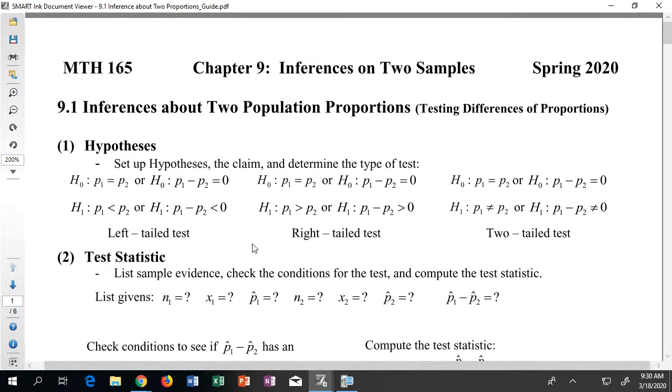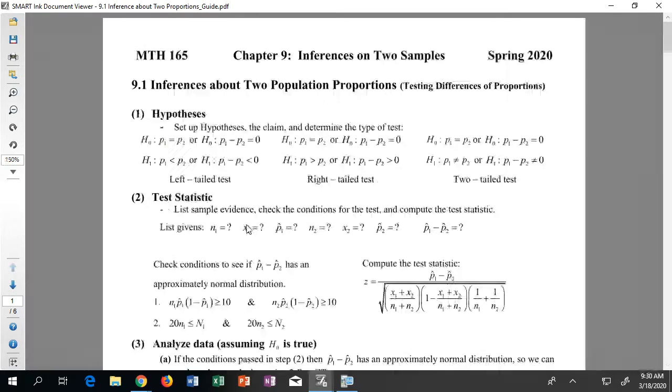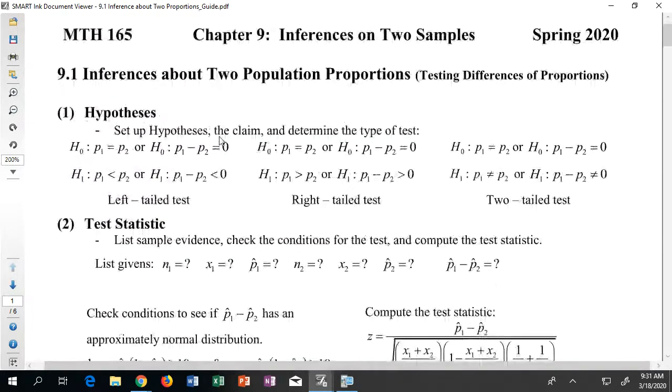In the notes you can see here that we have this big scary first page. The goal here in 9.1 is going to be about doing testing to help us try to figure out something about two population proportions, or more specifically, we're going to be testing the differences of proportions. You can see down here that I'm going to have a bunch of different hypotheses that are going to be laid out.